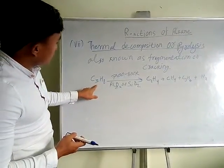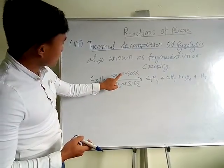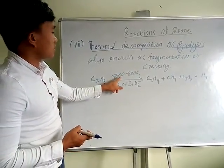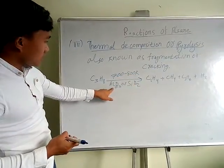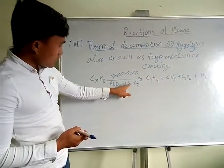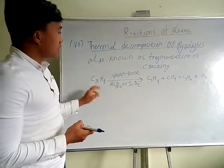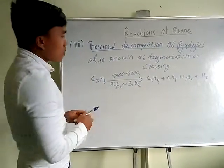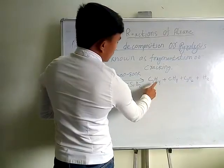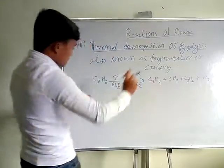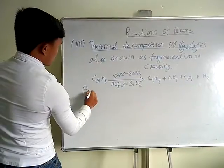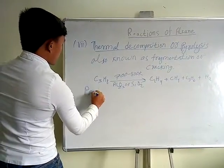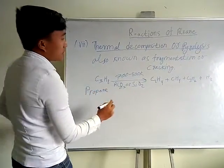They would give heat at high temperature, and this uses catalyst AL2O3 or SiO2. They give so many compounds. Here are the different compounds. Let's see the naming - this is called propane.